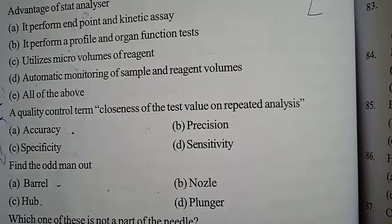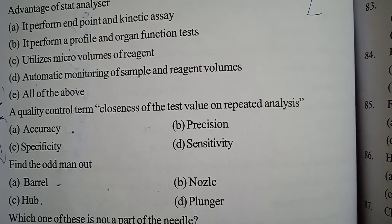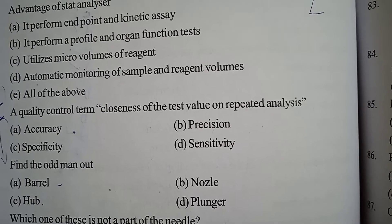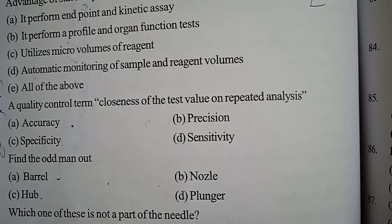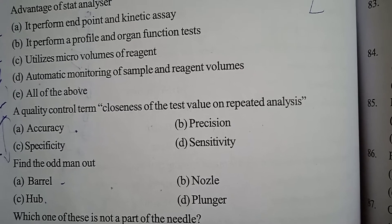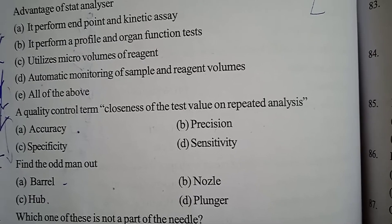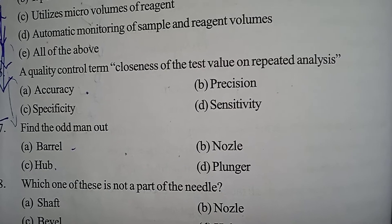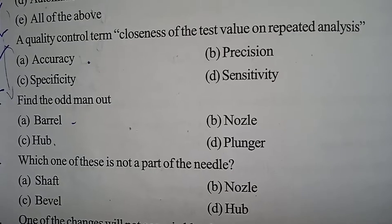Accuracy is related to closeness to the original value. Specificity is specific for one analyte. Sensitivity means it is sensitive in the case of low quantity — it will detect the presence of a low quantity.